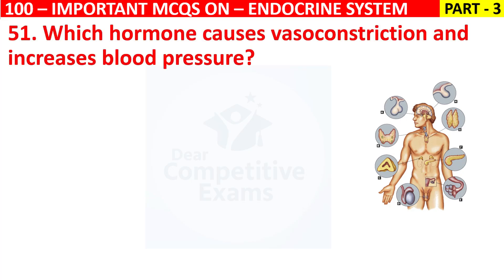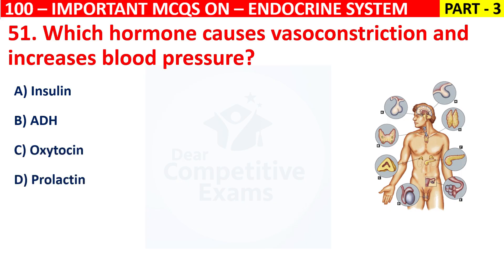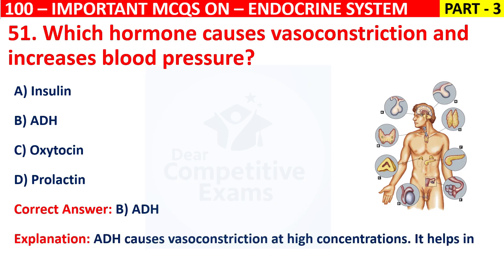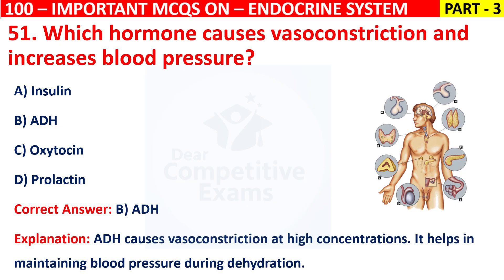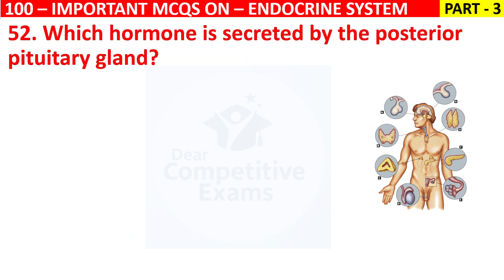Which hormone causes vasoconstriction and increases blood pressure? The options are Insulin, ADH, Oxytocin, or Prolactin. The correct answer is B, that is ADH hormone. ADH hormone causes vasoconstriction at high concentrations. It helps in maintaining blood pressure during dehydration. Question number 52: Which hormone is secreted by the posterior pituitary gland?